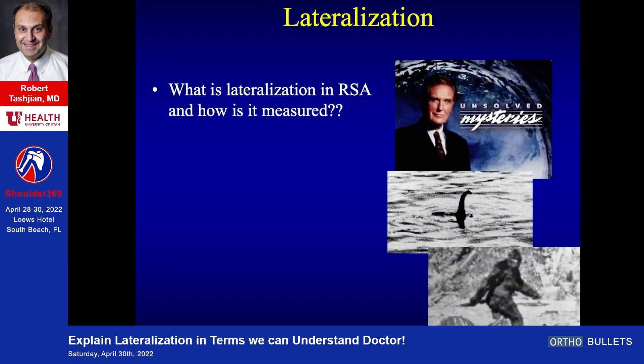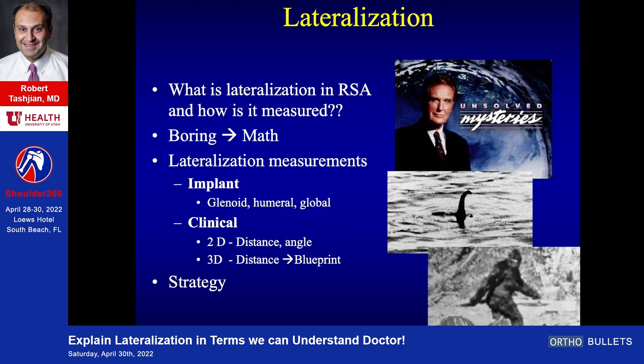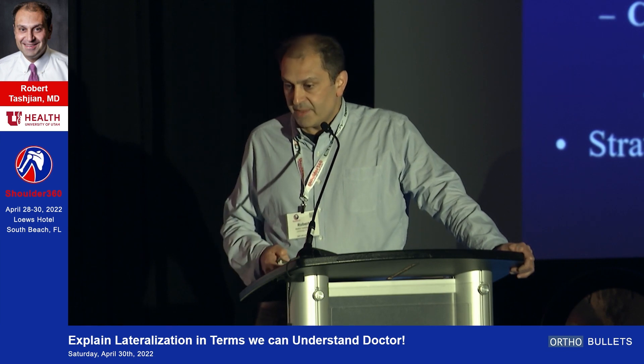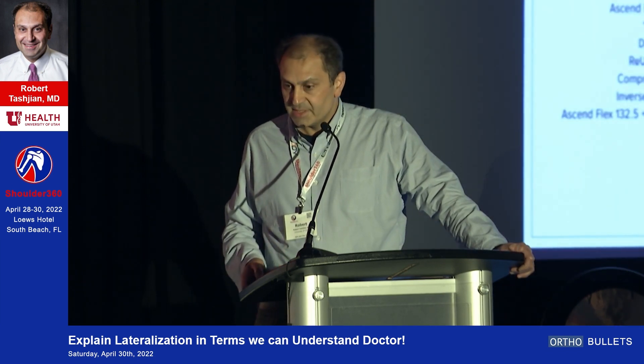It's math. Where it comes down to is that there are various lateralization measurements that we have. You can measure on the implant side, either measuring the glenoid alone, the humerus alone, or globally, or you can measure clinically. This can be in two dimensions using either distance or an angle, or in three dimensions using distance and some computer software program.